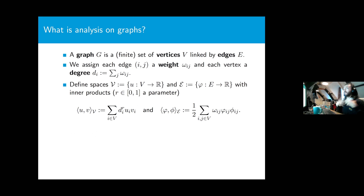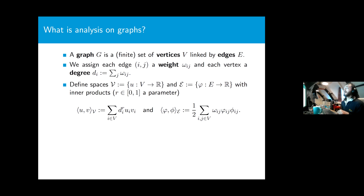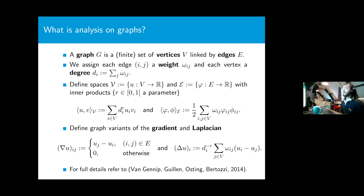How do we do analysis on graphs? Graphs are finite sets of vertices linked by edges, with a weight on each edge indicating how similar those two vertices are. We define Hilbert spaces on vertex and edge functions with inner products that are just the standard L2 inner product with graph-dependent scaling on each vertex or edge. We can then define variants of the gradient and Laplacian on a graph.